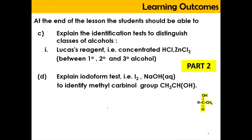In this video we're going to do the identification test in order to distinguish different classes of alcohol. We're going to react our alcohol with Lucas reagent, where the Lucas reagent consists of concentrated hydrochloric acid and zinc dichloride as its catalyst. This is going to help us identify whether the alcohol is primary, secondary, or tertiary.